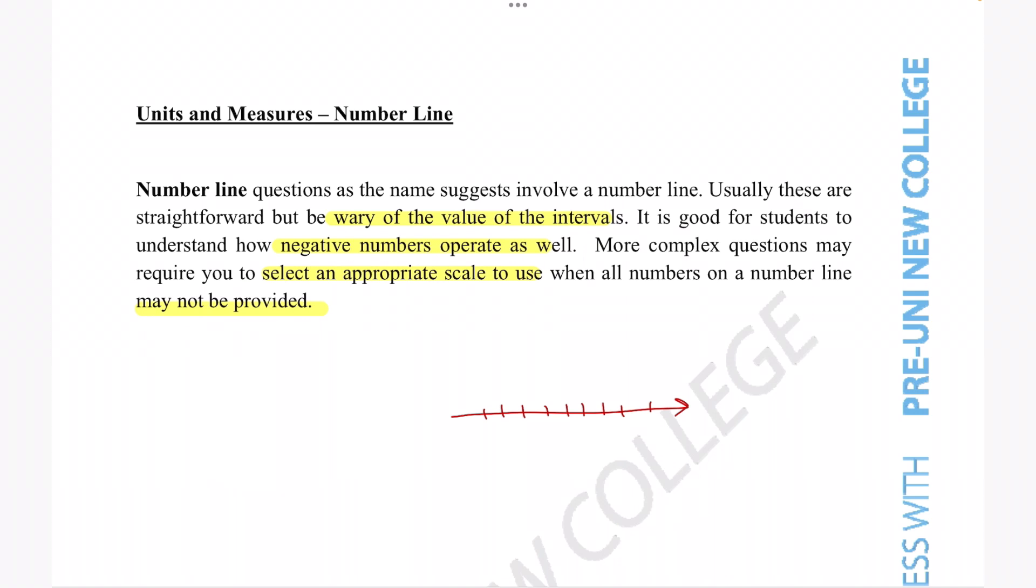Now things do get a bit more tricky when negative numbers are on the number line as well, because when you have negative operations for your addition and subtraction, sometimes the addition or subtraction doesn't always go in the direction you kind of originally may think.